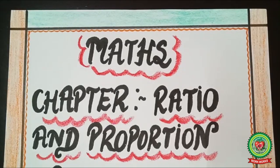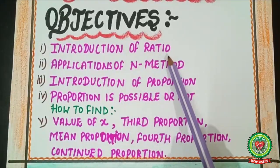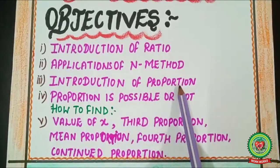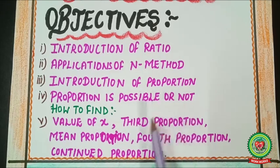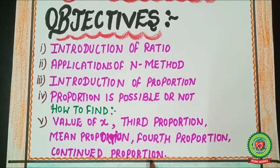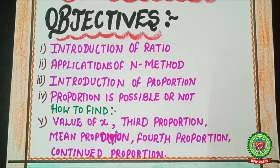Students, today we are going to start a new chapter: ratio and proportion. The objectives of this chapter are introduction of ratio, applications of the N method, introduction of proportion, checking if proportion is possible, and applications like finding the value of x, third proportion, mean proportion, fourth proportion, and continued proportion. Today's video covers the first four objectives.